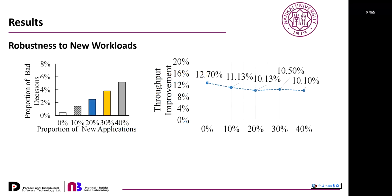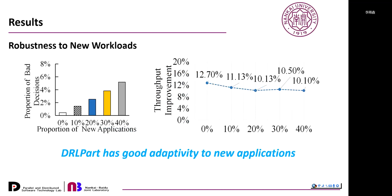We also show the robustness of DRL-Part to new workloads by adding different proportions of new applications to collocations. The left figure shows the number of bad decisions produced as new applications increase, and the right figure shows the corresponding throughput improvement. As the number of new applications increases, DRL-Part makes more bad decisions; however, the performance degradation is not significant. Results show that DRL-Part has good adaptivity to new collocations, workloads, and applications, and strong robustness to fast-paced dynamic system state changes.